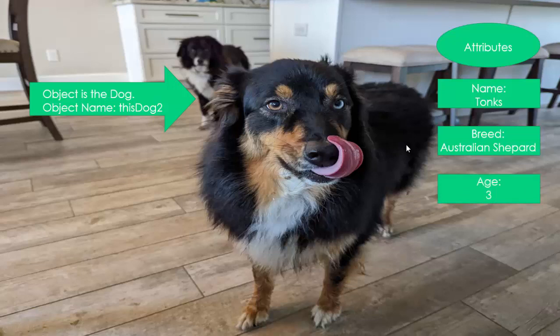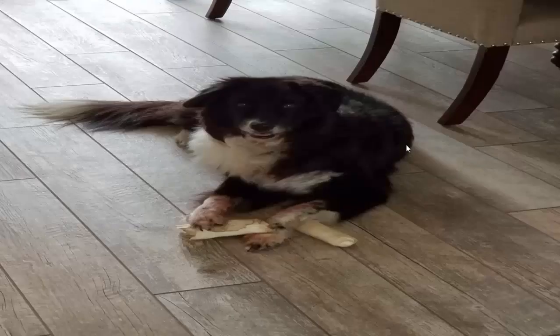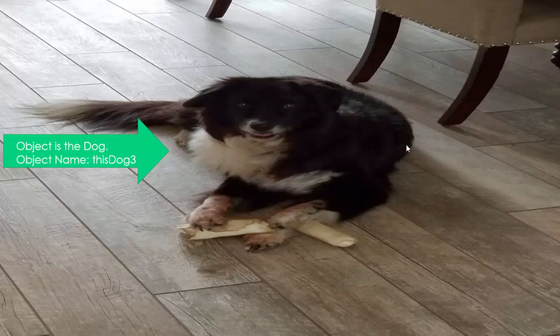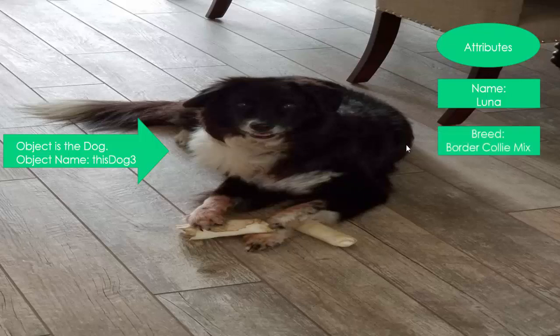Let's take a look at another object using the same dog class. So here we have this dog. This is dog three. And dog three, this object has its own name, which is Luna. It has its own breed, which is a border collie mix, and it has its own age, which is 15.